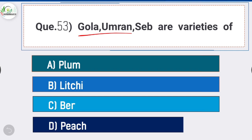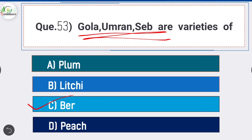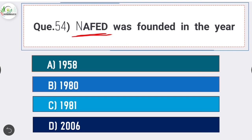Question number fifty-three: Gola, Umran, and Ziziphus are varieties of - answer is option C - ber. Gola, Umran, and Ziziphus are varieties of ber. Question number fifty-four: NAFED was founded in the year - answer is option A - 1958. NAFED was founded in the year 1958.